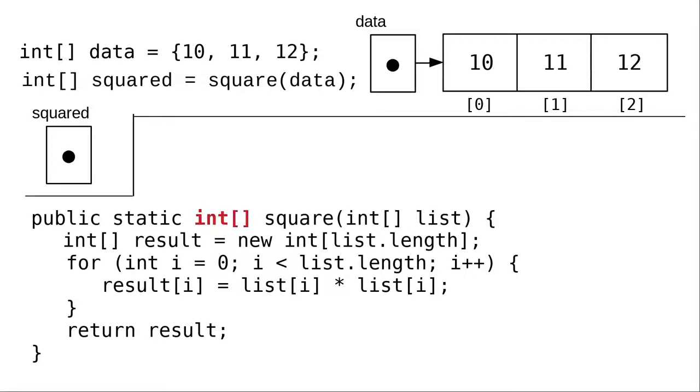Notice that the header for the method has changed. It's not void anymore. It returns an array of integers.